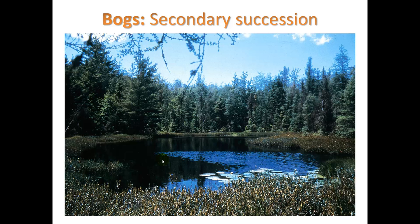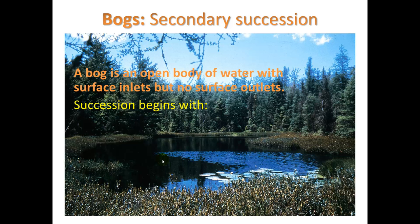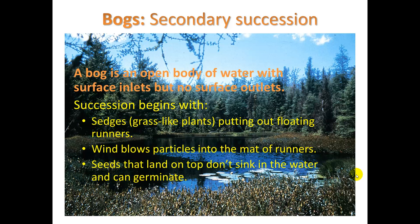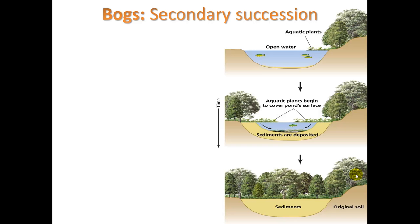Let's take a look at something called a bog. A bog is an open body of water with surface inlets but no surface outlets — like a big puddle that won't drain on its own but will fill up over time. Succession here begins with sedges, which are grass-like plants, putting out floating runners. Wind blows particles into the mat of runners. These particles become bits of soil — organic matter, bits of wood, and similar material. Seeds that land on top don't sink in the water, so they stay and germinate. The mat becomes thicker and shrubs and trees begin to grow.